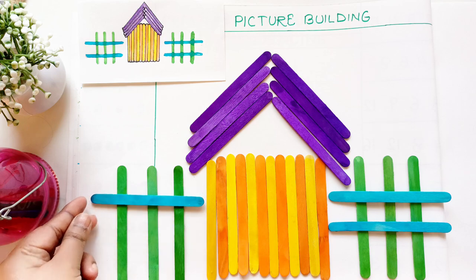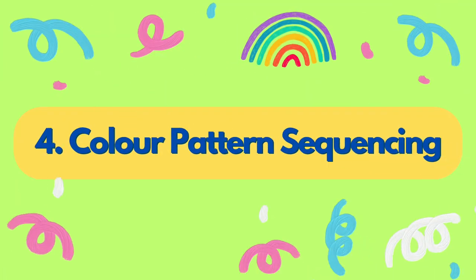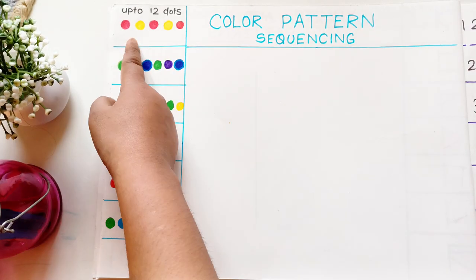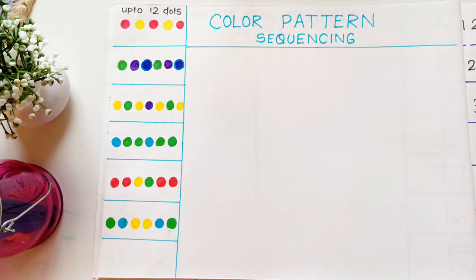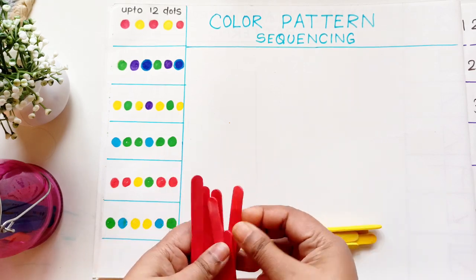Now the fourth activity is color pattern sequencing. I have drawn some sample sequences of colors like red, yellow, red, yellow, red, and the child has to count this color coding up to 12 dots and keep sticks according to that.